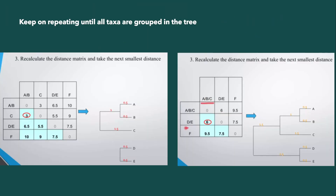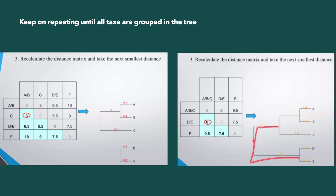The smallest value in this matrix is 6, so we cluster ABC with DE. Dividing 6 by 2 gives 3. We had already written 0.5 on earlier branches, so we subtract 0.5 from 3 to get 2.5. On the ABC side, we subtract 0.5 and 1 from 3 to get the remaining branch length. The node here corresponds to value 6, and we join ABC and DE together in the tree.